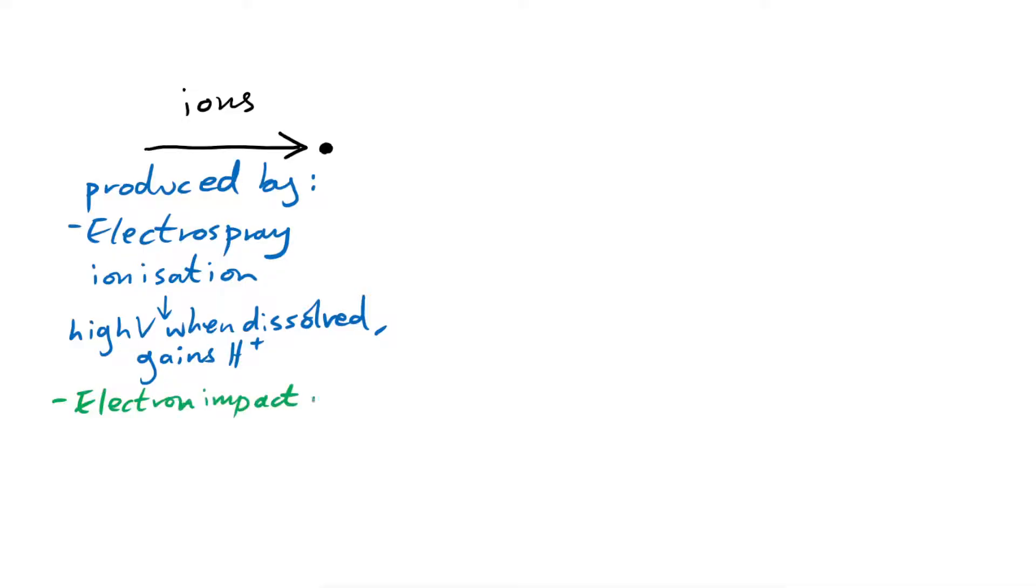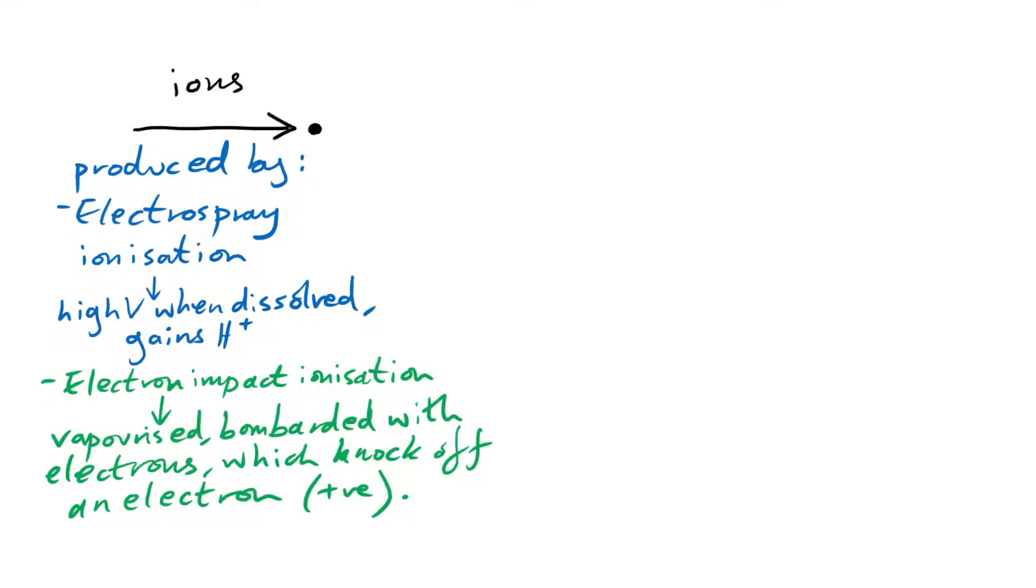Or electron impact ionization. The substance is vaporized, then bombarded with electrons, which knock off an electron. So in both cases, they gain a charge of plus one. Well, when we say plus one, plus 1.6 times 10 to the minus 19 Coulombs. In other words, just plus one electron charge, just positive instead of negative. We could call that one E.